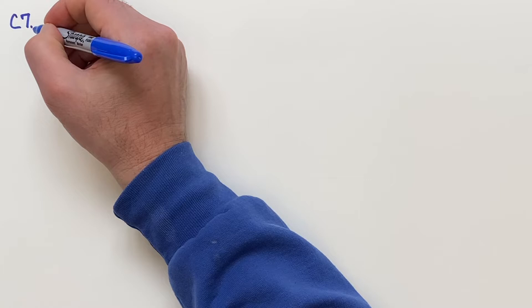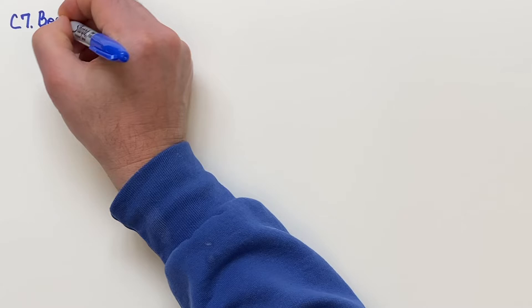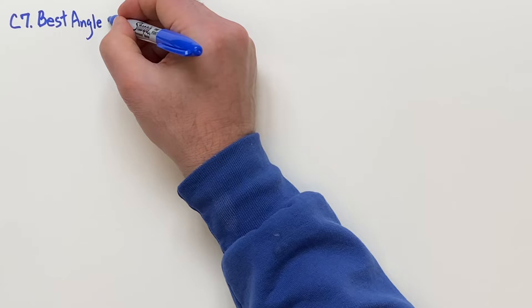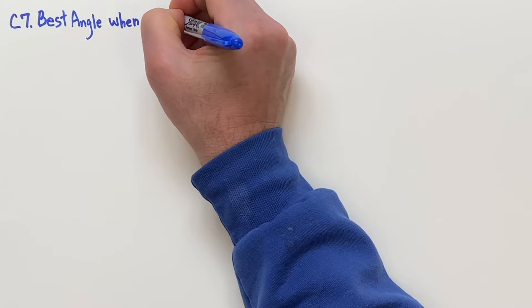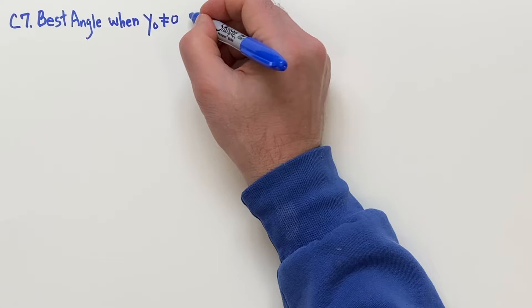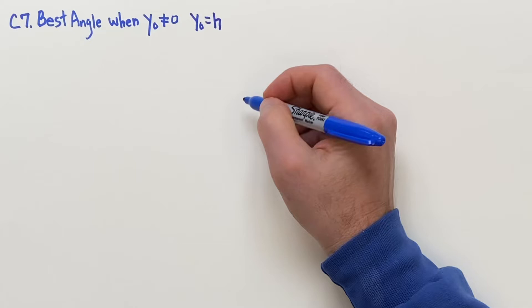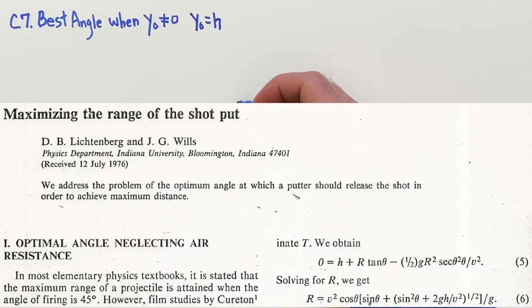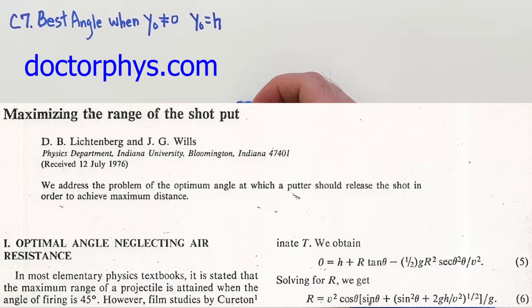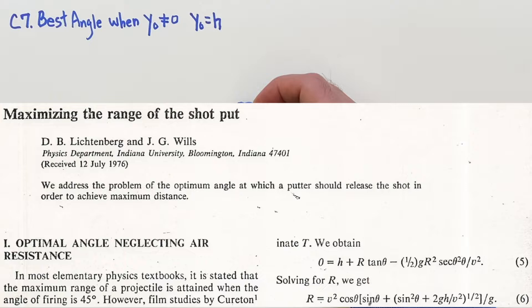Now we come to C7, an optional section, and this is going to deal with the best angle when your initial y is not equal to zero. We're going to consider the initial y to be equal to some height h. This is from a publication by Lichtenberg and Wills — you have the reference in the textbook. It came out right when I started teaching, in May 1978.